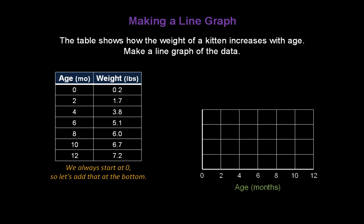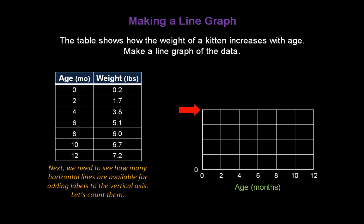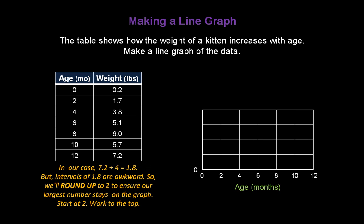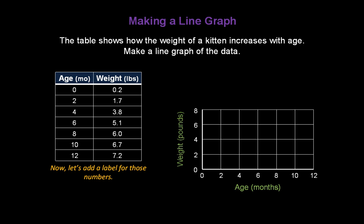Now let's figure out our scale for the vertical axis. We always start at zero, so let's add that at the bottom. Then we need to see how many horizontal lines are available for adding labels to the vertical axis. So let's go ahead and count them. There's one, two, three, four. So we want to evenly space the data out among those four lines. To do that, simply take the largest number you need to graph and divide it by four. Looking in the second column, we see the largest number is 7.2. So we want to take 7.2, divide it by four, and you get 1.8. But intervals of 1.8 are awkward, so we're going to round that up to two to ensure our largest number stays on the graph. So start at two, go by increments of two, and work your way to the top of the graph. Now let's add a label for those numbers. It's the weight in pounds.